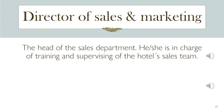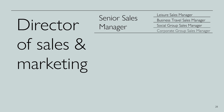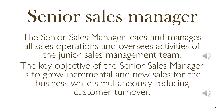The head of the sales department is in charge of training and supervising the hotel sales team. The director of sales works closely with the general manager to determine appropriate sales strategies in all market segments towards maximizing hotel revenues. The senior sales manager leads and manages all sales operations and oversees activities of the junior sales management team. The key objective of the senior sales manager is to grow incremental and new sales for the business while simultaneously reducing customer turnover.